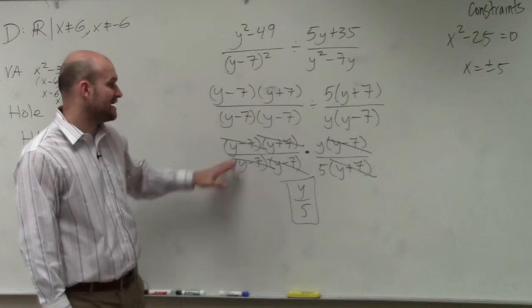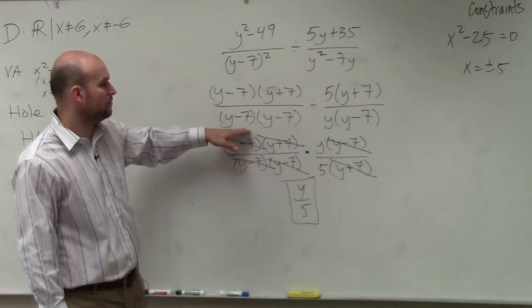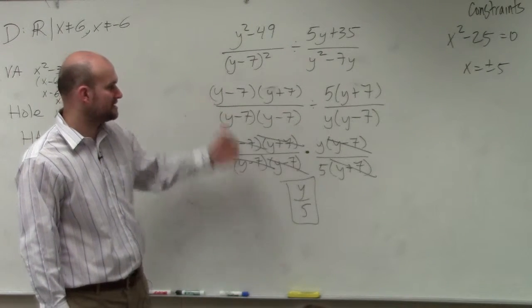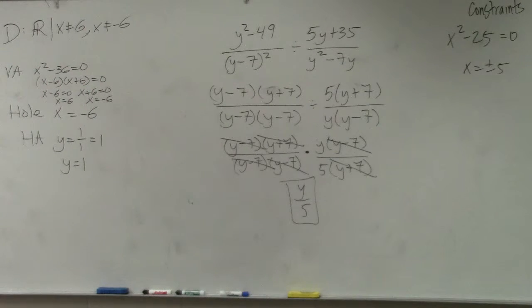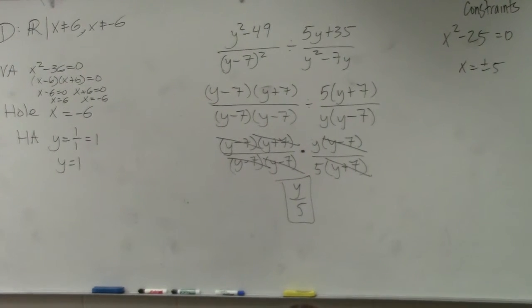But the constraints is what makes the denominator 0. y cannot equal 0. y cannot equal positive 7. All right, is everybody on?